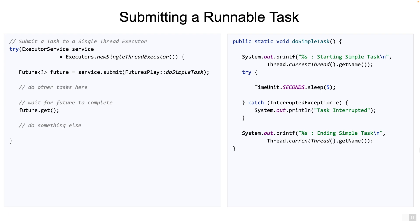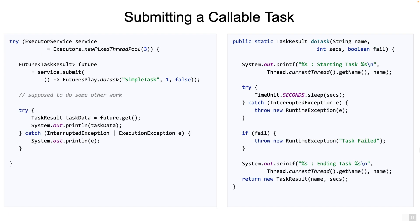But this example is not very exciting because nothing is being returned to the caller. Let's take a look at another example where we have a method on the right which returns a record of type TaskResult. So now we have something that the task can return to the caller, which is likely what the caller wants. The doTask method simply waits for an arbitrary number of seconds and then returns the TaskResult. But notice that this method cannot be a Runnable because it's returning something - however, it's a prime candidate for using as a Callable interface.